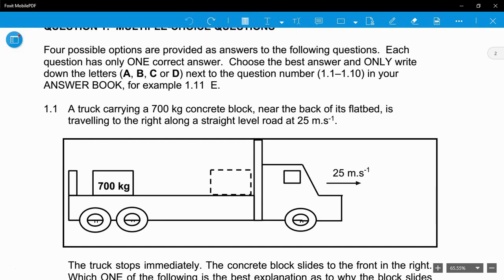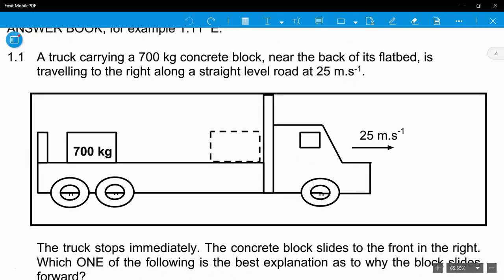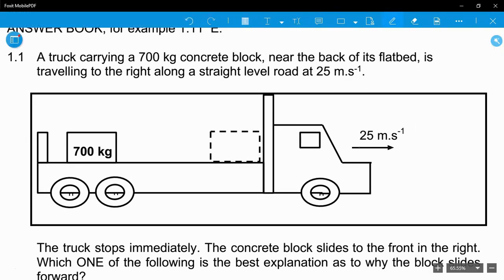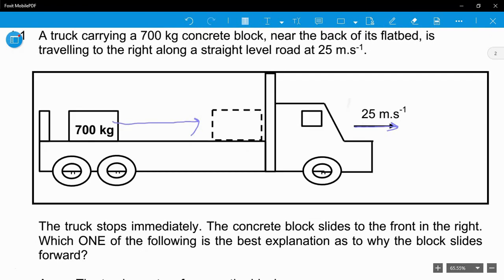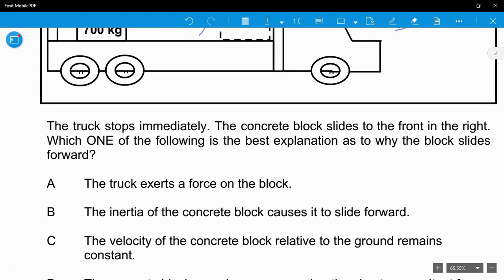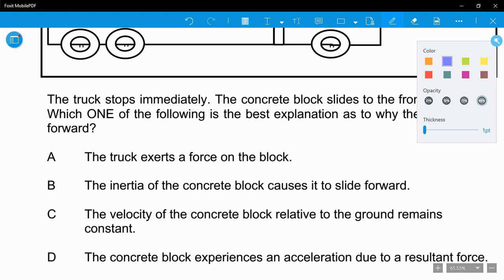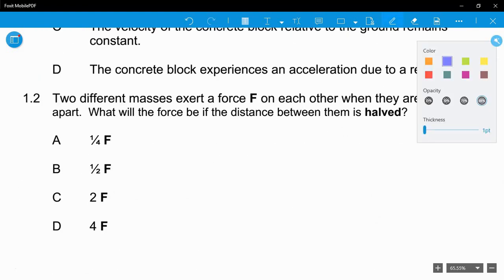So let's start off with this multiple choice. You only choose one of each and each multiple choice counts for two marks. 1.1: A truck carrying a 700 kg concrete block near the back of its flatbed is traveling to the right along a straight road at 25 meters per second. It stops immediately and the concrete block slides all the way. What's the best explanation for why the block slides? This should be intuitive - you should know immediately that this is inertia. Inertia is the resistance of an object to change its motion. So the only one of these options involving inertia is B. The first answer is B.